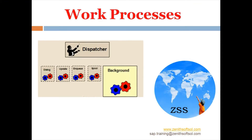Today we are going to learn about ABAP work processes — how many work processes there are and what their services are. The ABAP work processes are Dialog, Update, Enqueue, Spool, and Background. The two other processes that run behind these five work processes are Dispatcher and Message Server.